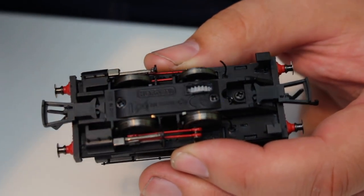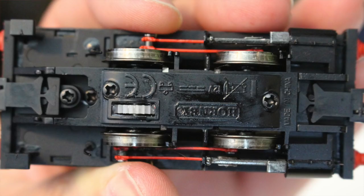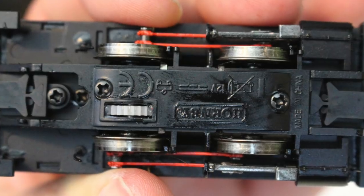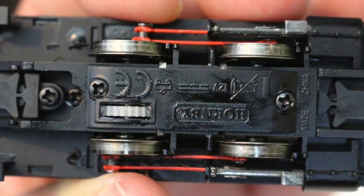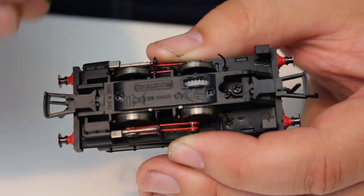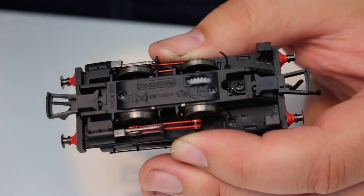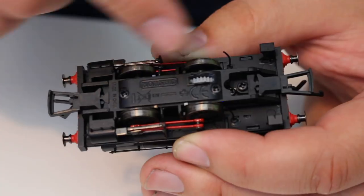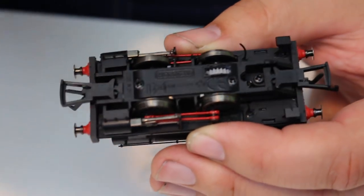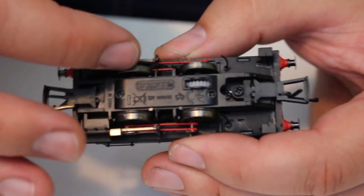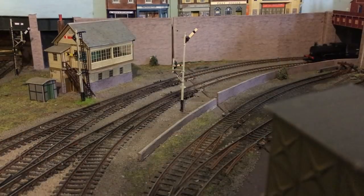Now one of the problems I did find with the initial run of Pecketts was the pickup wipers on the backs of these wheels, probably hampered somewhat by it only being a very short four wheel wheelbase, they tended to lose contact so you could find through point work or tight curves that it could have a bit of a pickup problem. Now Hornby seemed to have addressed that, certainly with this particular example the pickup wipers do seem to consistently make contact and I experienced no jittery running at all.